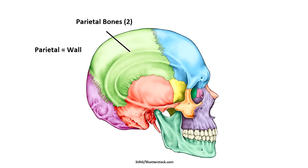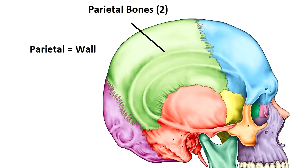Let's take a look at the eight cranial bones first, starting with those two pairs. The first pair of bones in the cranium are the parietal bones — the word parietal sounds similar to 'pair,' so that can help you remember there are two of them. The word parietal actually means 'wall,' and these bones make up the side wall of your cranium.